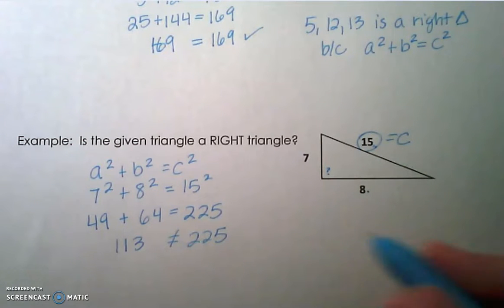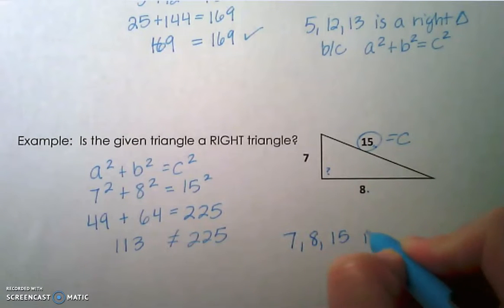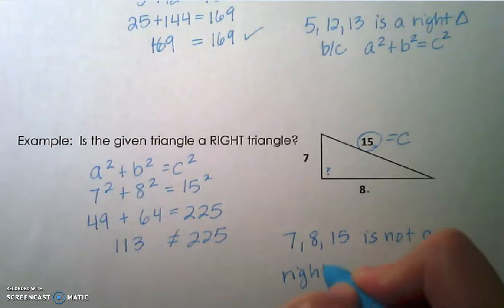A 7, 8, 15 is not a right triangle because a squared plus b squared, the sum of the two smaller legs squared, does not equal the square of the hypotenuse.